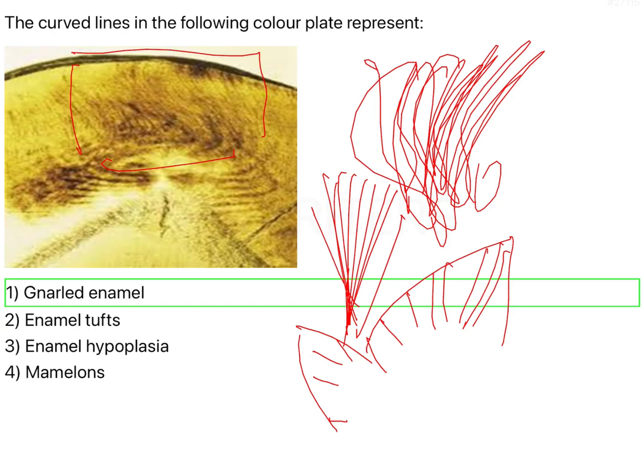That is the reason why the enamel rods in these areas are much more compact and much more coarse in nature, so that they can provide that strength to the enamel in these regions. That is the primary function of your gnarled enamel. It helps in strengthening your enamel to a greater percentage.